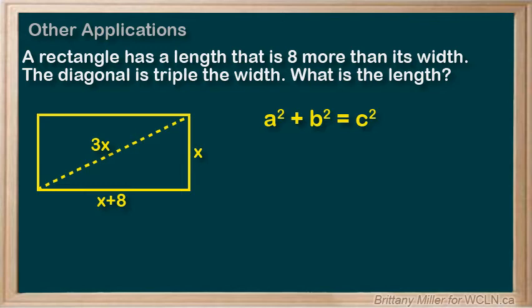So let's just say that the width is a and the length is b. Then a squared plus b squared is x squared plus x plus 8 all squared, and that is equal to c squared, which is 3x all squared, or 9x squared.